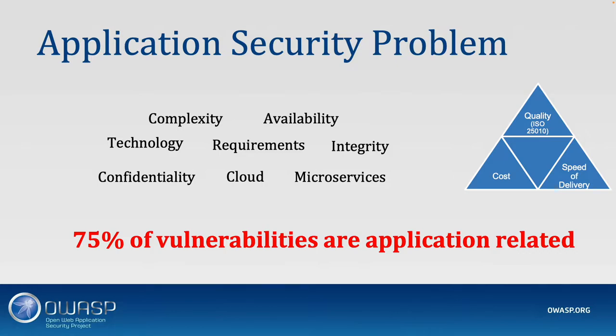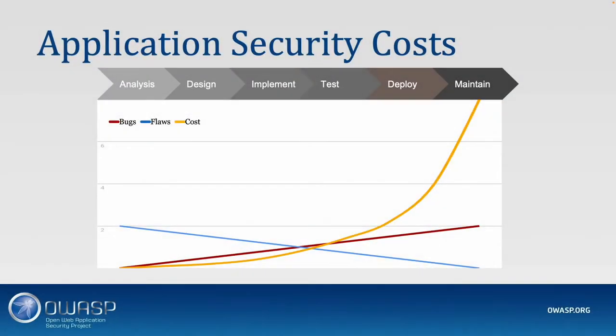Applications are the number one attack vector for cybercriminals. The total cost of software increases exponentially over time — partially due to bugs which increase over time, while flaws, which are design issues, go down. The cost of maintenance goes exponentially up. The point is: it pays off to detect security issues as early as possible in the software development lifecycle.